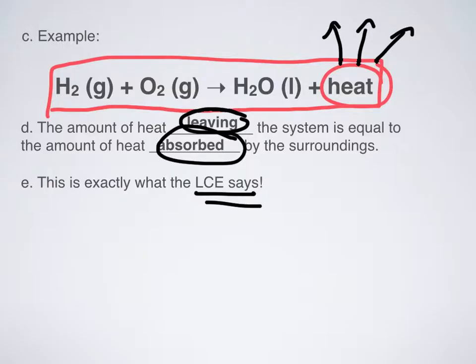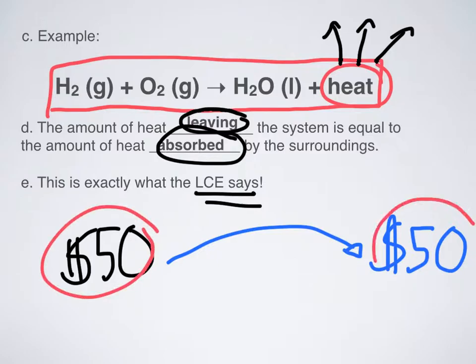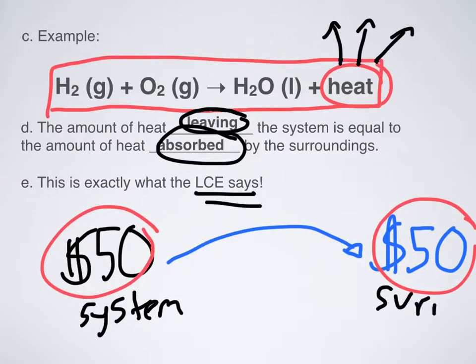I like to think of it like this: let's say I give you 50 bucks. That money is like energy. Let's say I am the system and you are the surroundings. I lost $50 — I lost 50 energy units; you gained 50 energy units. But along the way, none of that money was lost. Energy is just moving from one place to another. That's all that happens in energy flow reactions. Energy is flowing from one place to another, but it's not being created and it's not being destroyed. That's the law of conservation of energy.